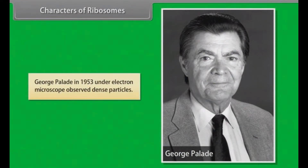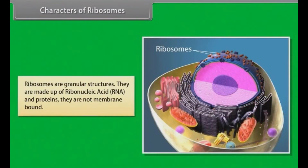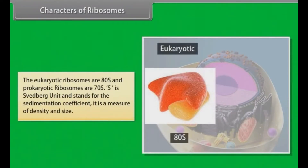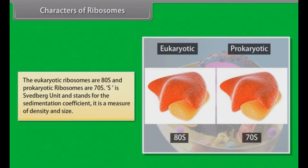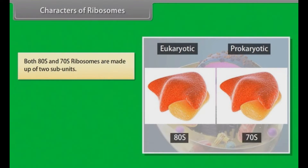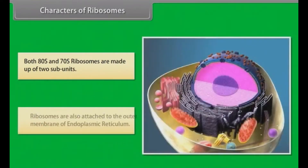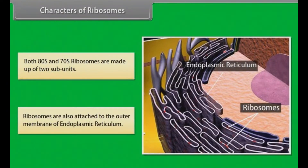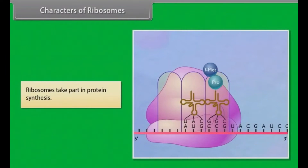Characters of ribosomes. George Palade in 1953 under an electron microscope observed dense particles. Ribosomes are granular structures made of ribonucleic acid (RNA) and proteins; they are not membrane-bound. The eukaryotic ribosomes are 80S and prokaryotic ribosomes are 70S. S is the Svedberg unit and stands for the sedimentation coefficient — a measure of density and size. Both 80S and 70S ribosomes are made up of two subunits. Ribosomes are also attached to the outer membrane of the endoplasmic reticulum and take part in protein synthesis.